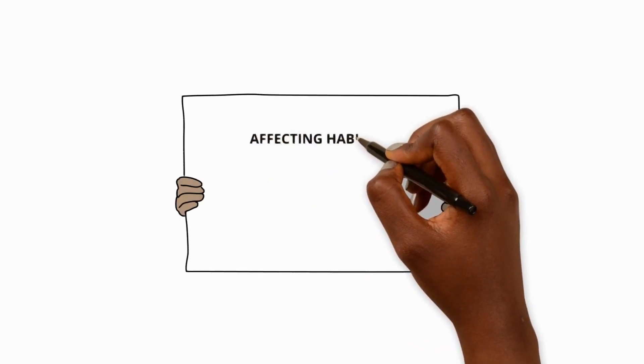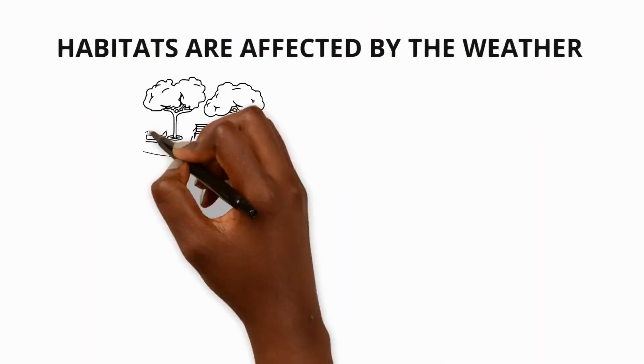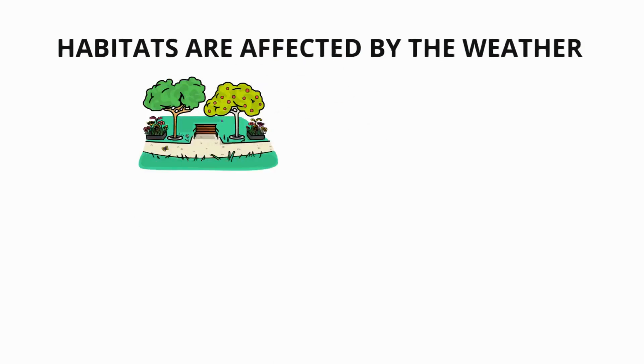Affecting habitats. Habitats are the place where animals and plants live. They can be changed both by natural processes and human activities.